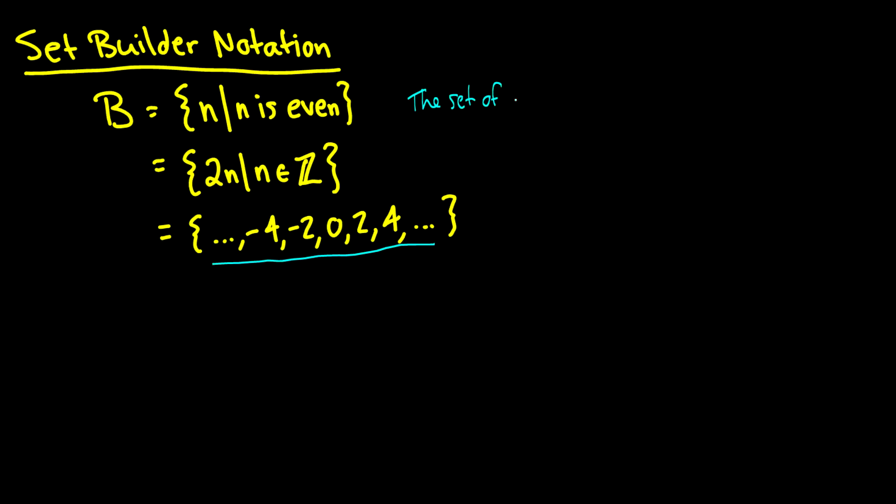So let me write this out for you. The set of N such that N is even. So this little bar right here, sometimes it is a colon. This just means such that.